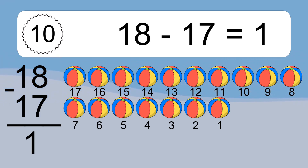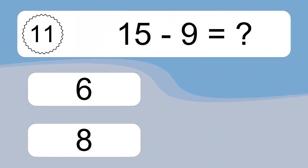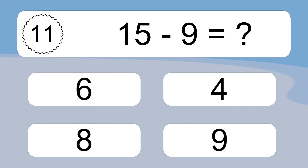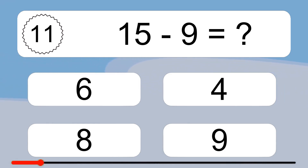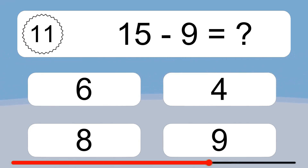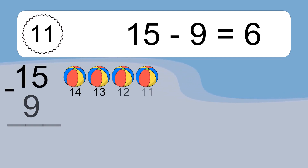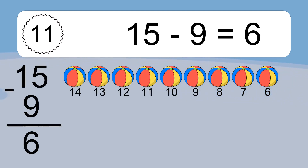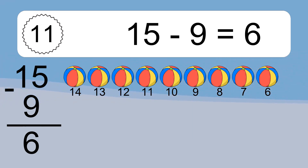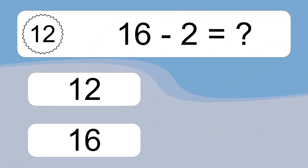10, 9, 8, 7, 6, 5, 4, 3, 2, 1. 15 minus 9 equals what? 15 minus 9 equals 6. Let's count it. 14, 13, 12, 11, 10, 9, 8, 7, 6.